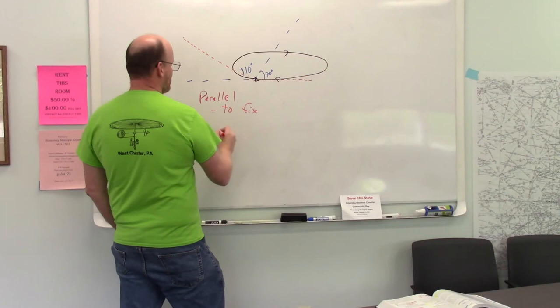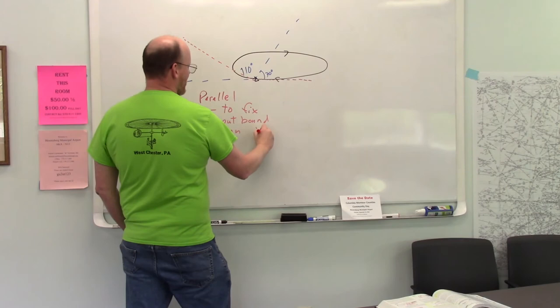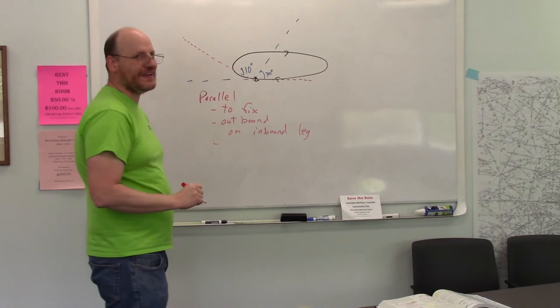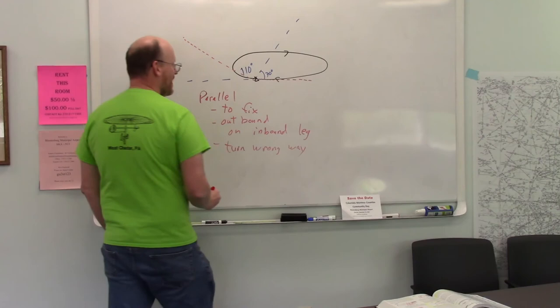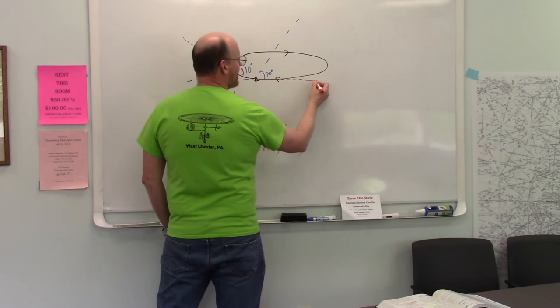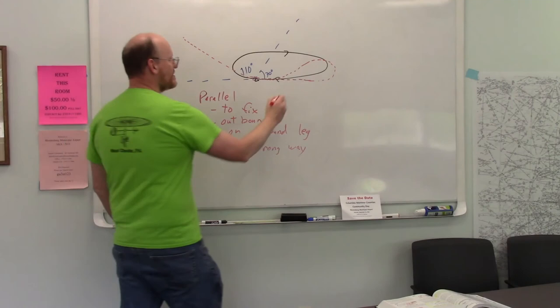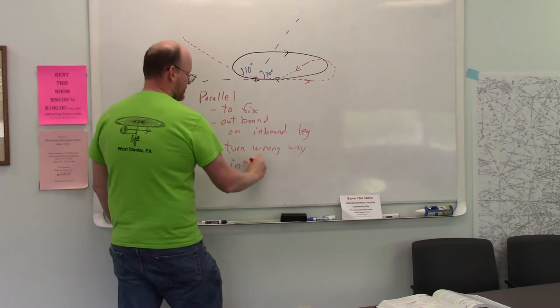So let's say I'm over here. I approach. I fly to the fix. Now, I get to the fix. I fly essentially outbound on the inbound leg. Parallel. To the fix. Outbound. The inbound leg. And then I turn the wrong way. And I'm going to have to overturn. So instead of making right turns, I'm going to make a left turn. And I'm going to go like this all the way around and then re-intercept. So this is a parallel entry.